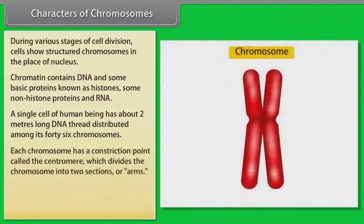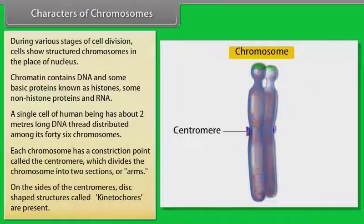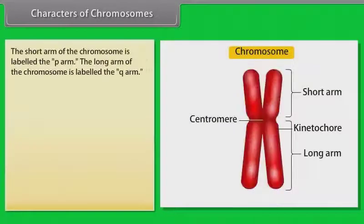Each chromosome has a constriction point called the centromere, which divides the chromosome into two sections or arms. On the sides of the centromere, disc-shaped structures called kinetochores are present. The short arm of the chromosome is labelled the P arm, and the long arm is labelled the Q arm.